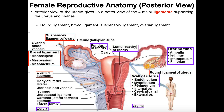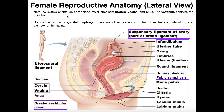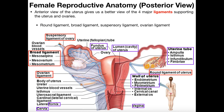Now let's take a look at the fallopian tubes. The fallopian tube is one name; some sources will actually call them uterine tubes, but that term is synonymous with fallopian tube. If we take a look at the one on the patient's right, we follow the fallopian tube around like a hose, and it's going to loop back and indirectly make contact with the ovary. This is a cross section of the right ovary, and of course we have a left and right of each of these.